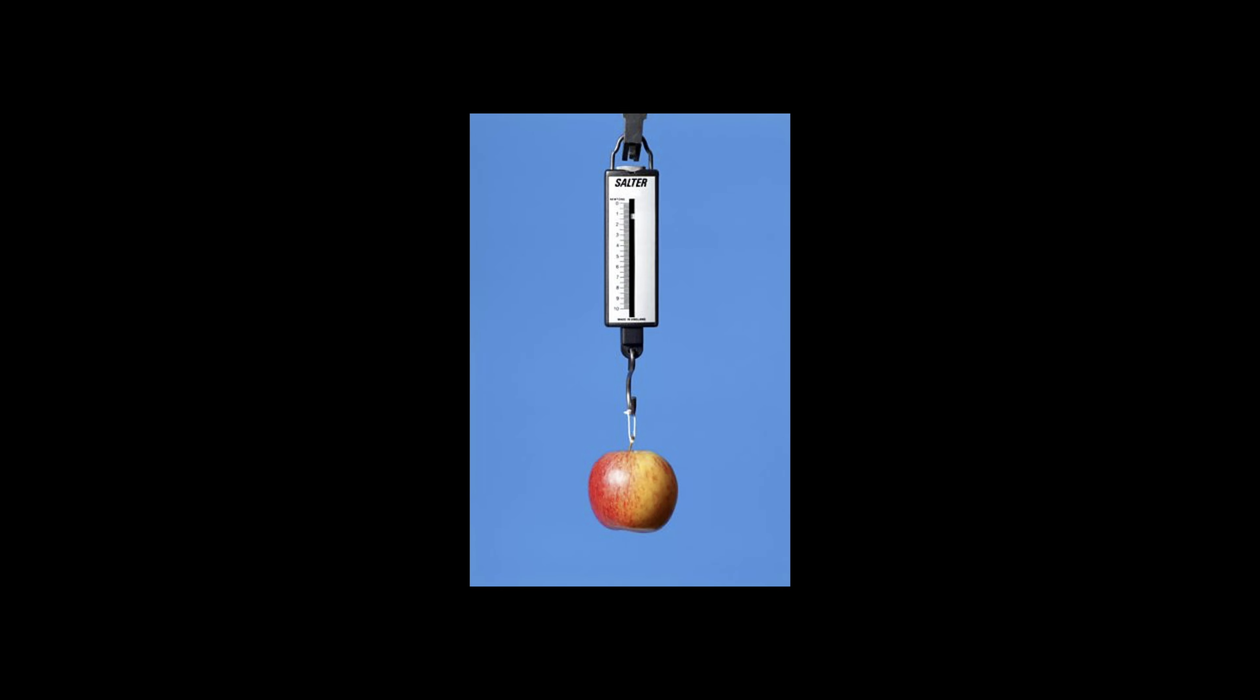Here you can see an apple being weighed in something called a spring balance or a Newton balance and you can see that the apple clearly has weight or a force pulling it because it can pull the spring in the Newton balance and the little gauge moves down. That means that the earth is pulling the apple with a force that is directly proportional to the mass of the apple.